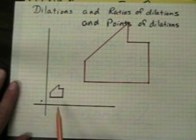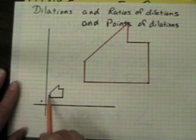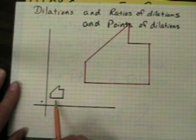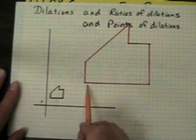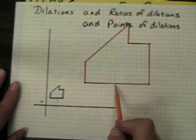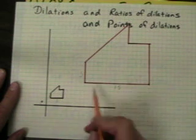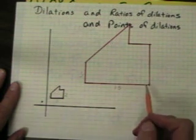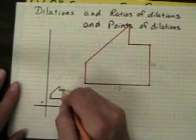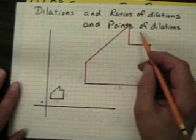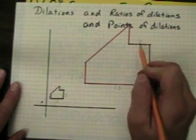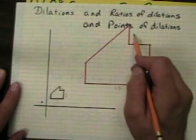Let's look at some measurements and check. This side here is 1 and this side here is 5. This side here is 3 and this side is 15. This side is 2 and this side is 10. This side is 1 and this little piece here is 1 and this is 5.